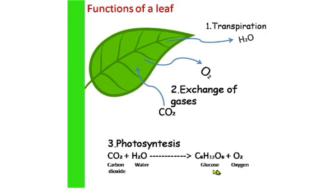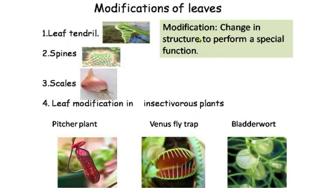In photosynthesis, carbon dioxide combines with water to form glucose. Glucose is the food for the plant. This combination takes place only in the presence of sunlight, and that is why the process is called photosynthesis. During this process, one more product is formed — oxygen — which is released by the leaves.